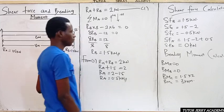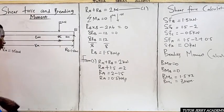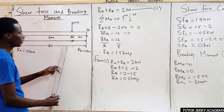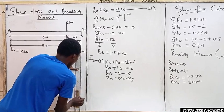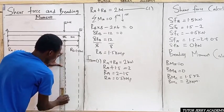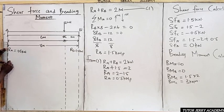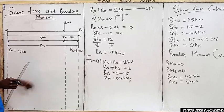Now we have our values and can draw the bending moment and shear force diagrams. The first thing to do is draw dotted lines downward at every point where we have a load or reaction force — at B, at C, and at A.